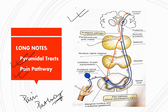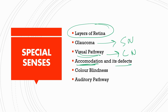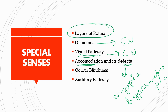Moving ahead, we have the special senses — the last unit for first-year human physiology. You should know in detail about the layers of the retina, glaucoma for a short note, visual pathway for a long note, and accommodation and its defects including myopia, hypermetropia, cataract, and color blindness. Any pathway — pain, auditory, or visual — will never come as a short note; it will definitely be asked in long note questions.